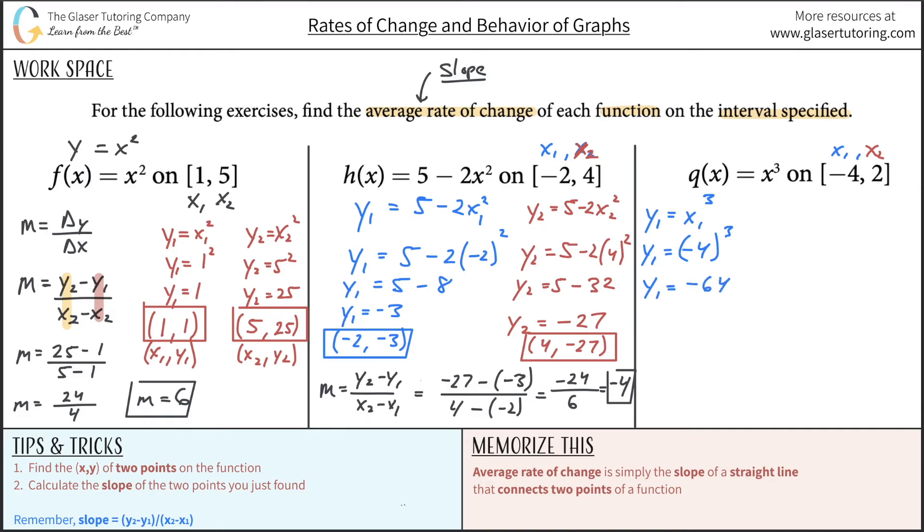So let me put in the coordinates now. The X value here was negative 4, comma negative 64. Great, so I'll box this now.